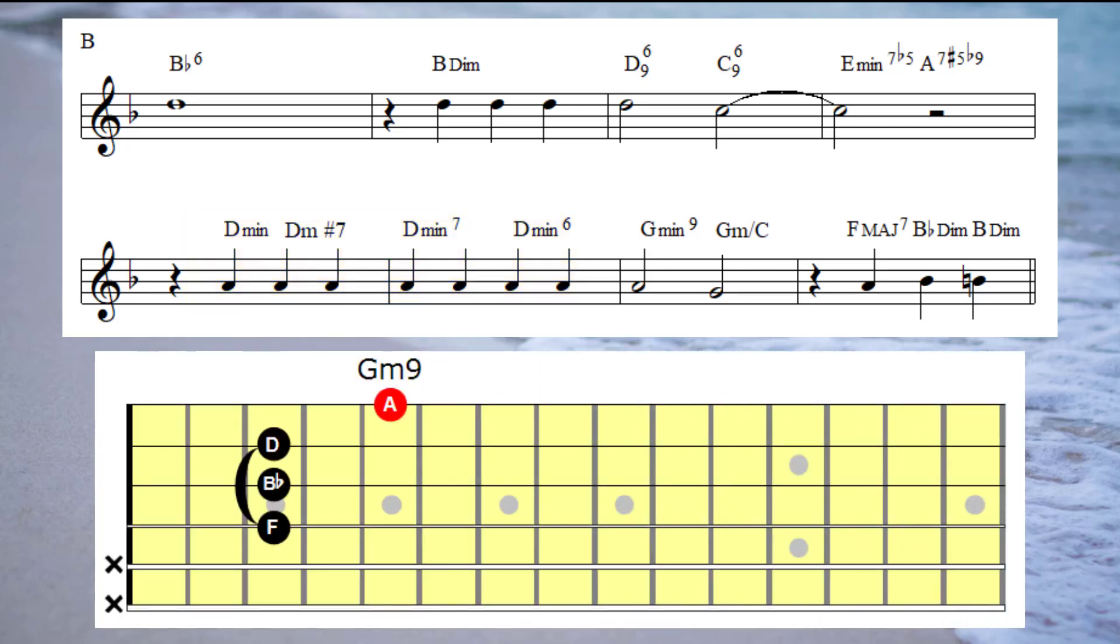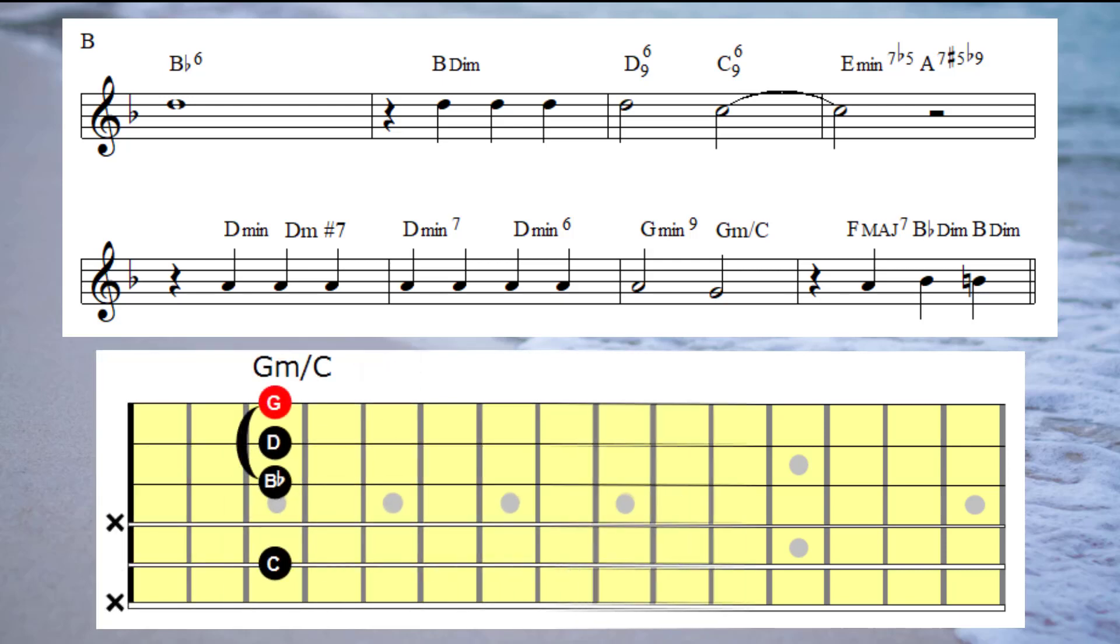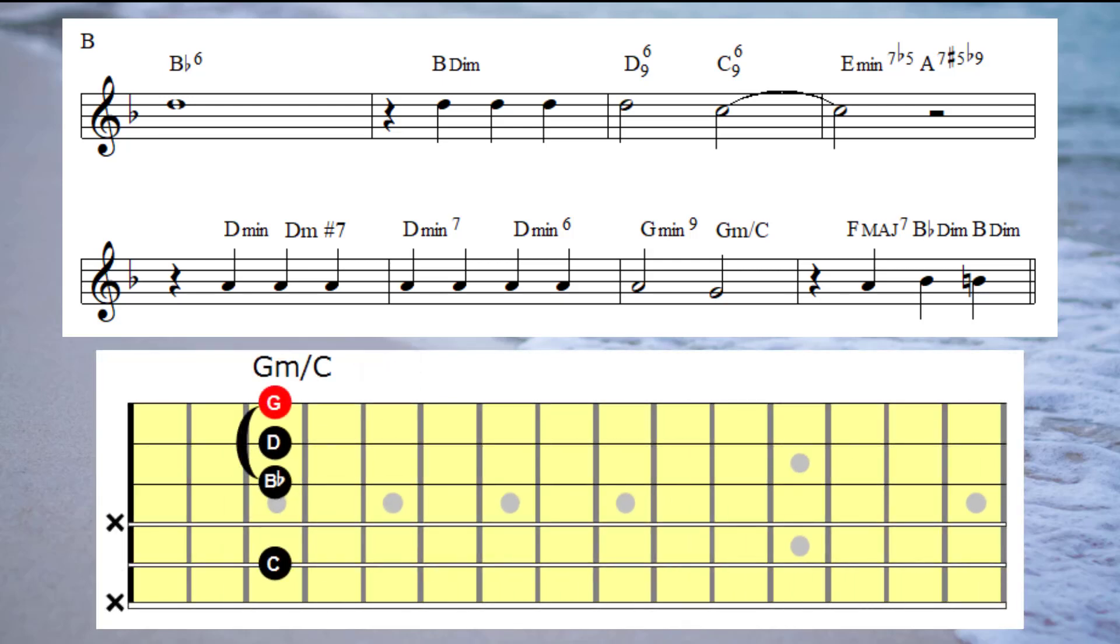On to bar seven, and I'm going to play G minor ninth under the A note. And this time under the G note, I'm going to play a G minor triad with a C bass.